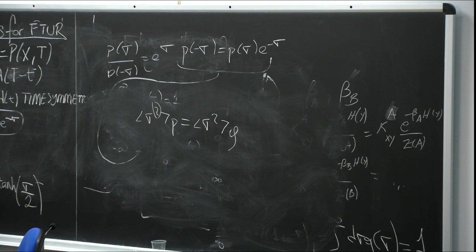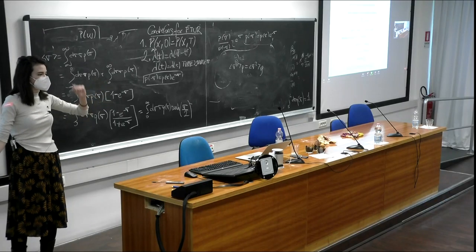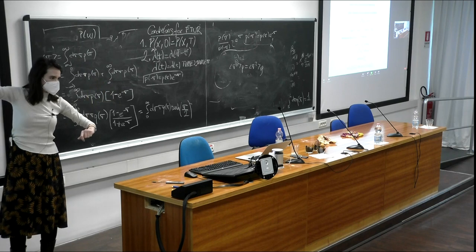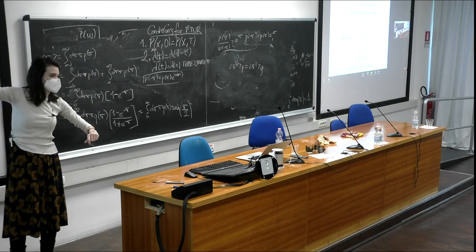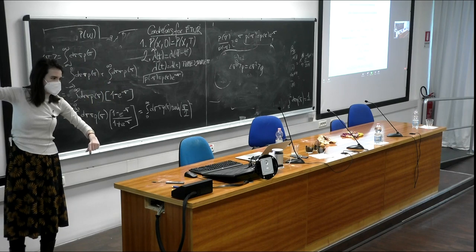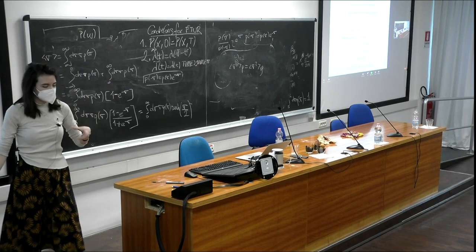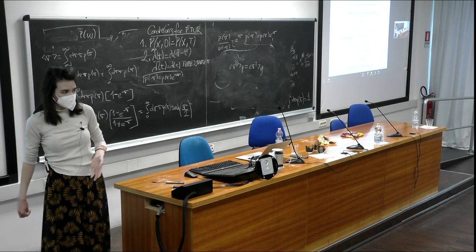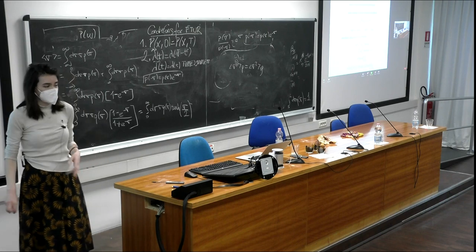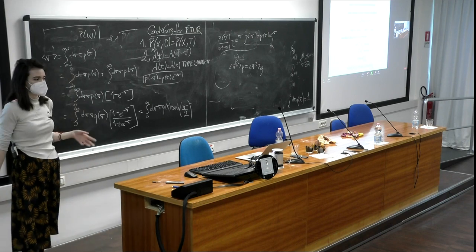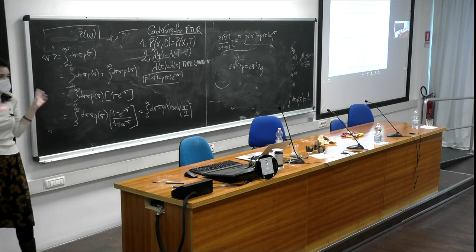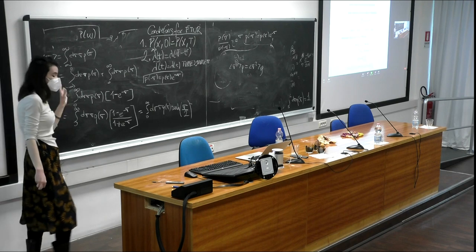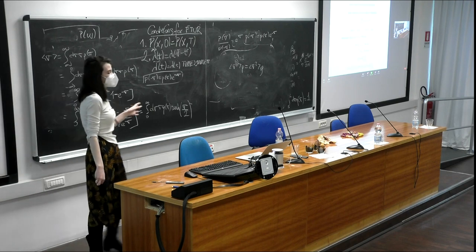The main idea of this lecture when we provide this derivation is not to impose that you should know how to derive a joint strong fluctuation theorem, but to know how we use fluctuation theorems to derive bounds in thermodynamics — in this case, thermodynamic uncertainty relations.